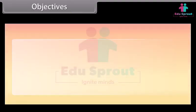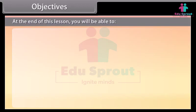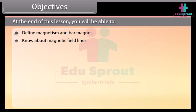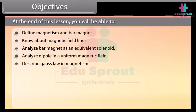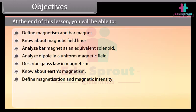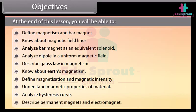Objectives: At the end of this lesson you will be able to define magnetism and bar magnet, know about magnetic field lines, analyze bar magnet as an equivalent solenoid, analyze dipole in a uniform magnetic field, describe Gauss's law in magnetism, know about Earth's magnetism, define magnetization and magnetic intensity, understand magnetic properties of material, and analyze hysteresis curve. Describe permanent magnets and electromagnets.